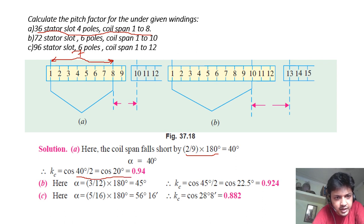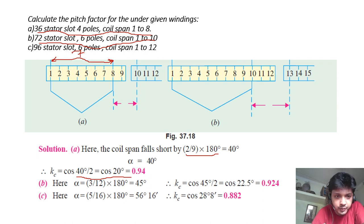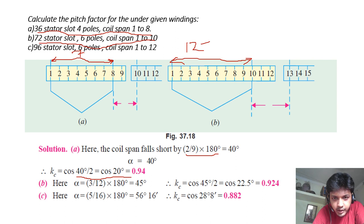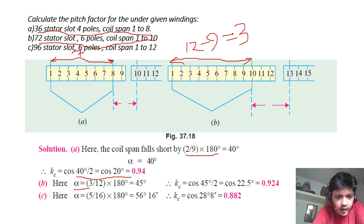For 72 stator slots, 6 poles, and coil span 1 to 10: 72 ÷ 6 = 12 slots per pole. For a full-pitch coil, the coil span will be 12 slots; that is, if a coil starts from slot 1, it will finish at slot 13. But the given coil span is 1 to 10, giving a span of 9. The coil is short-pitched by 12 − 9 = 3 slots. So α = (3/12) × 180° = 45°. Kc = cos(45°/2) = cos(22.5°) = 0.924.